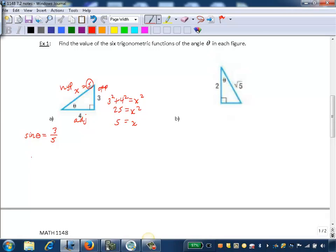I can quickly get the reciprocal of sine, which gives us cosecant. So cosecant of theta would be the reciprocal of 3 fifths, which is 5 thirds.